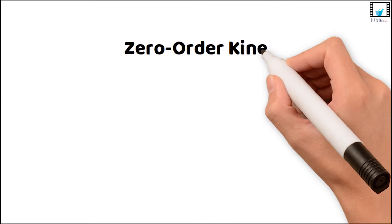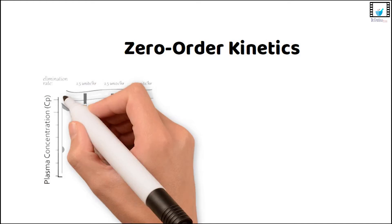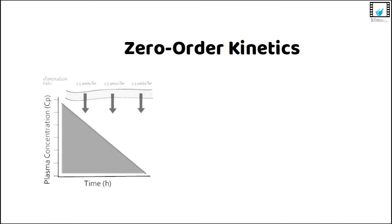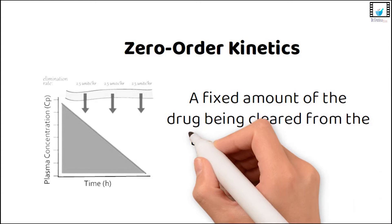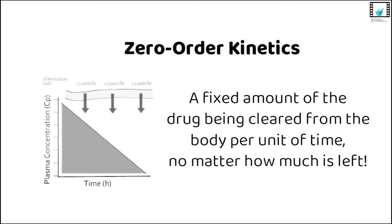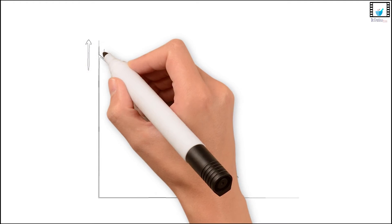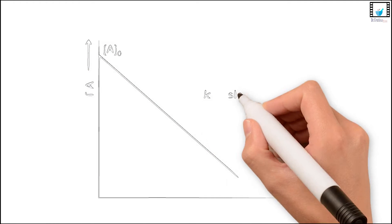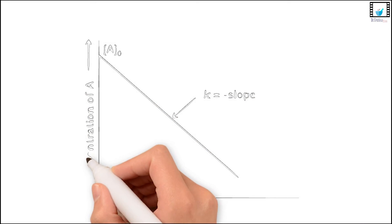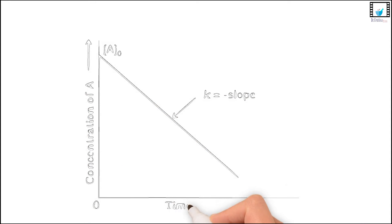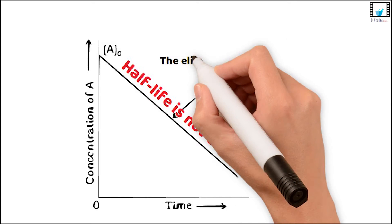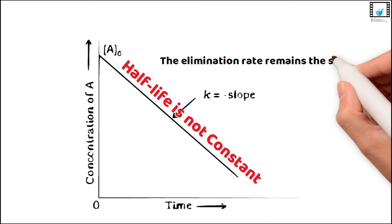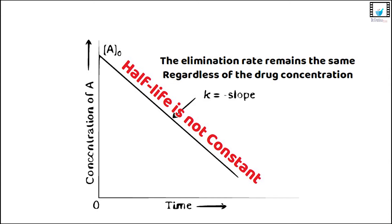In zero-order kinetics, the drug is eliminated at a constant rate, no matter what its concentration is. It's like a fixed amount of the drug being cleared from the body per unit of time, no matter how much is left. The graph of drug concentration over time in zero-order kinetics is a simple linear decrease, showing a constant drop in drug concentration. Unlike first-order kinetics, the half-life is not constant in zero-order kinetics, and the elimination rate remains the same regardless of the drug concentration.